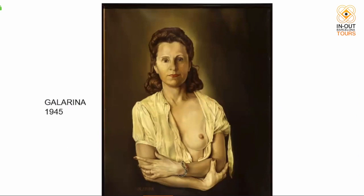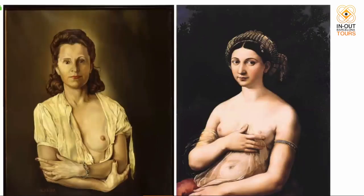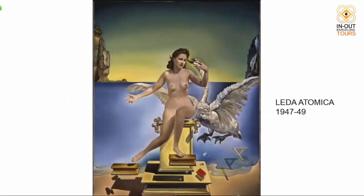Next to the 'Basket of Bread' is 'La Gallerina' — a realistic portrait of Gala that Dalí said was also his favorite. He said the shape of Gala's arms is the basket, and her naked breast is the bread. It's a very classic portrait of his muse with naked breast and a piece of jewelry. According to his memoir, it was inspired by Raphael Sanzio and his muse Fornarina — Dalí changed the name slightly to 'Gallerina' as a homage to Raphael.